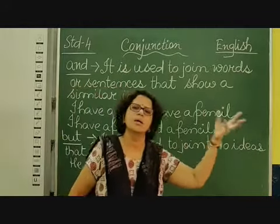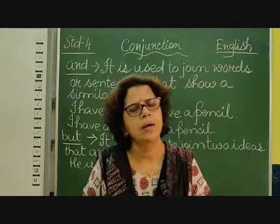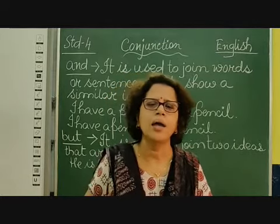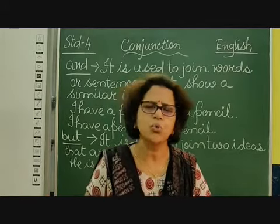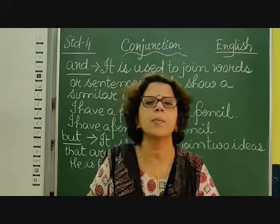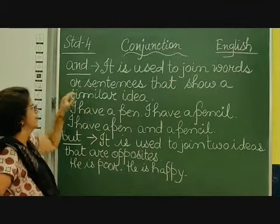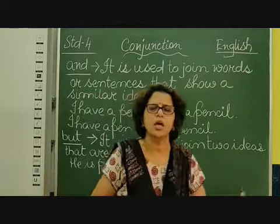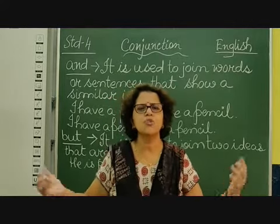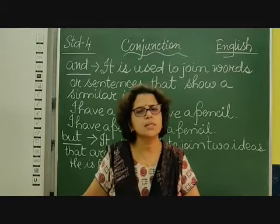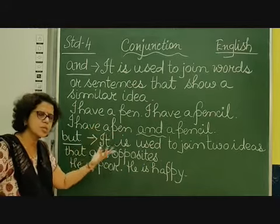For example: I completed my homework. I read the lesson. Both are the same ideas. So you can say: I read the lesson and completed my homework. Similarly, I have a pen. I have a pencil. Both things you are possessing, so we can say: I have a pen and a pencil. No need to write it in two different sentences. This conjunction 'and' joins these two sentences because both express the same idea.